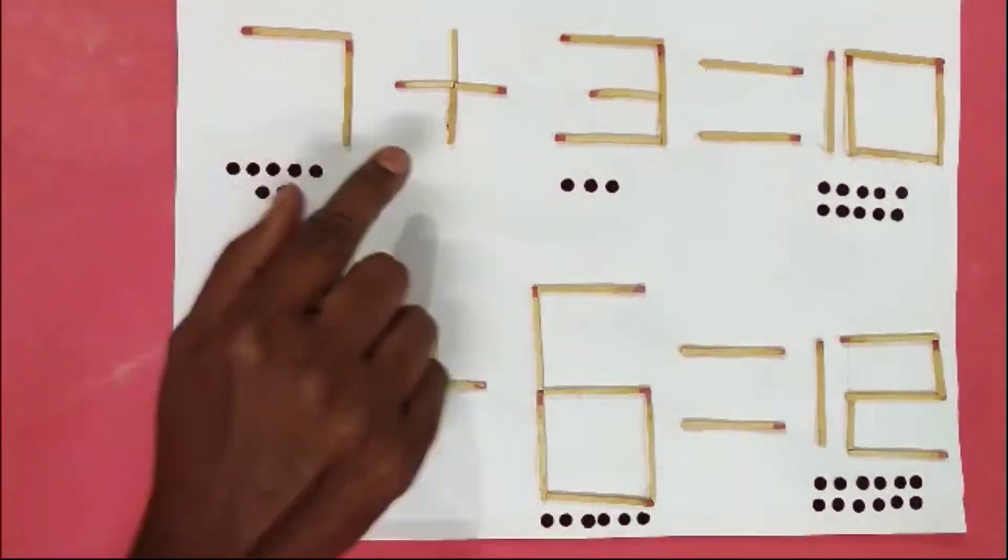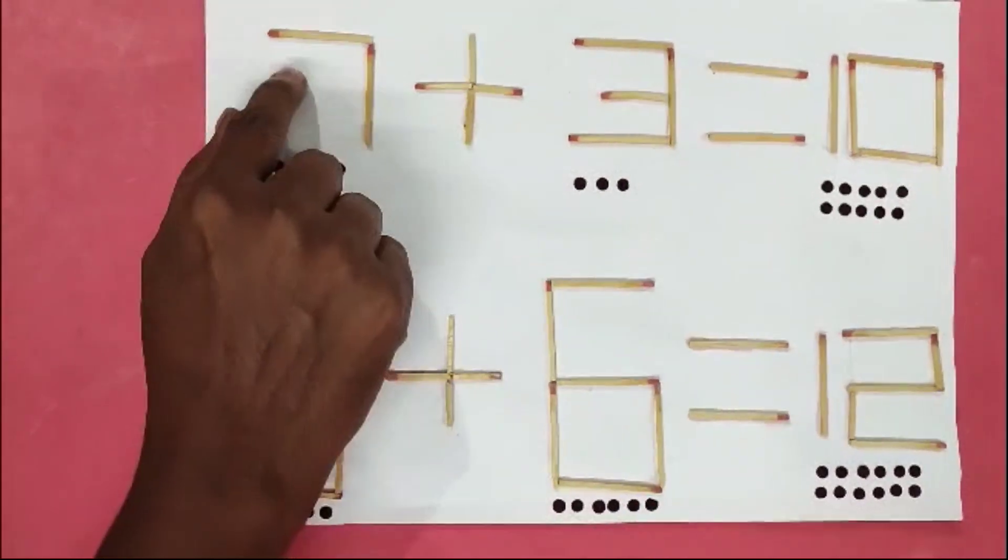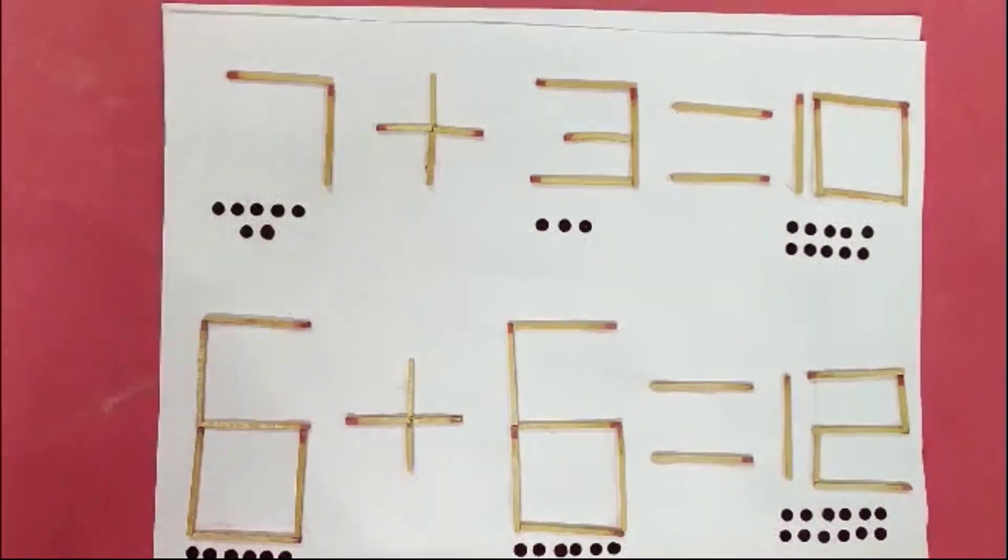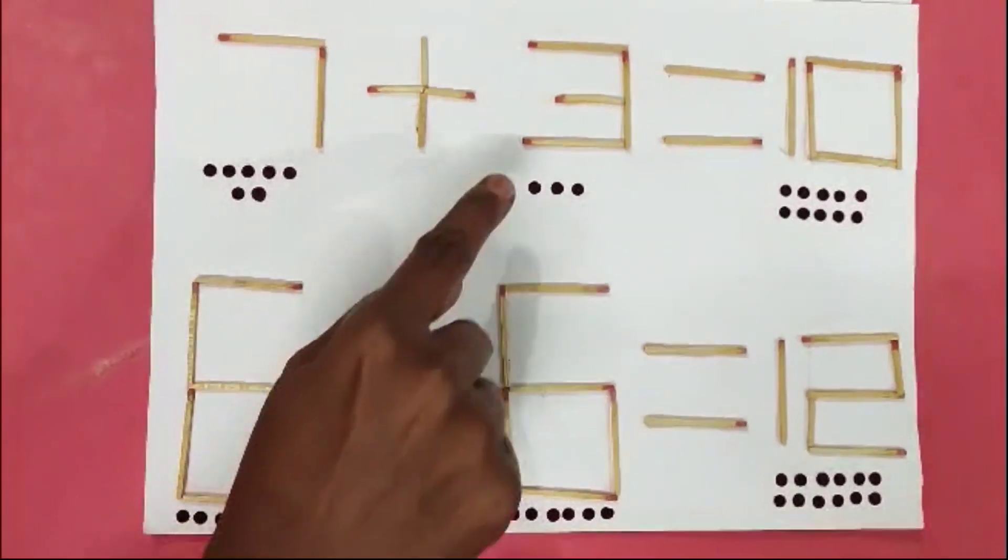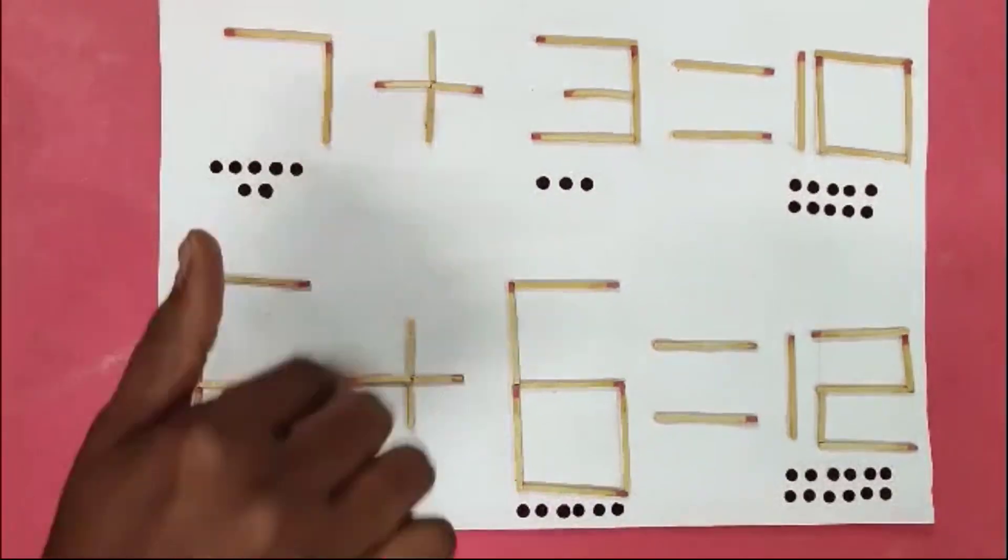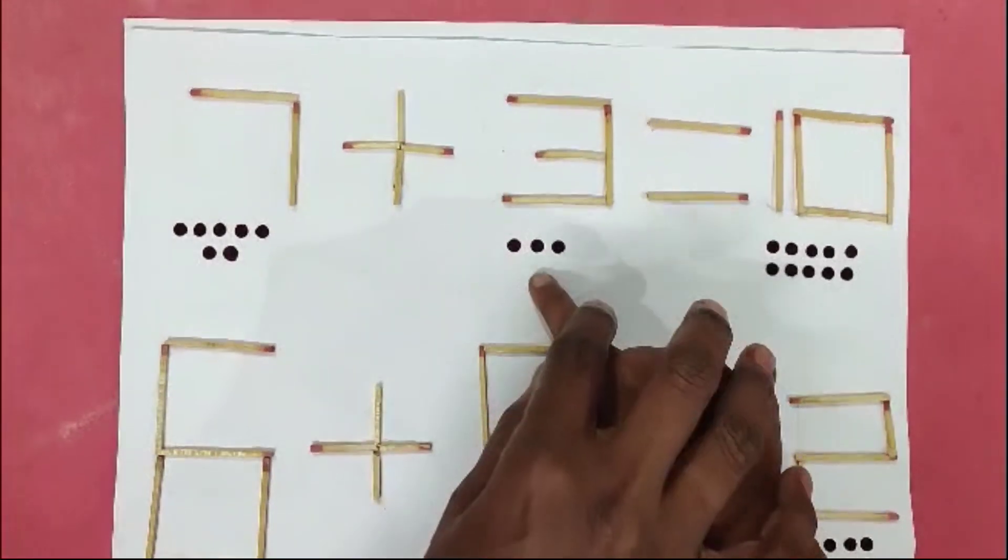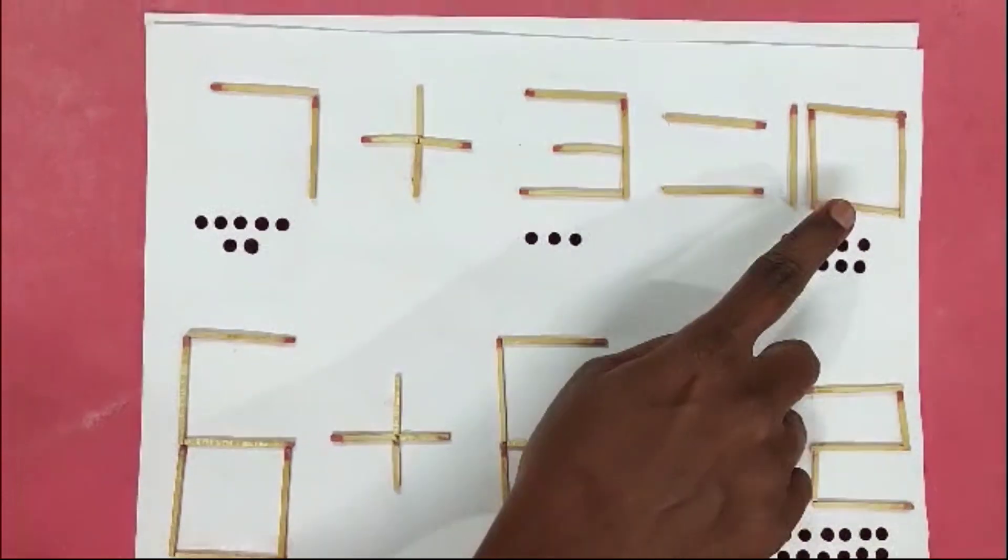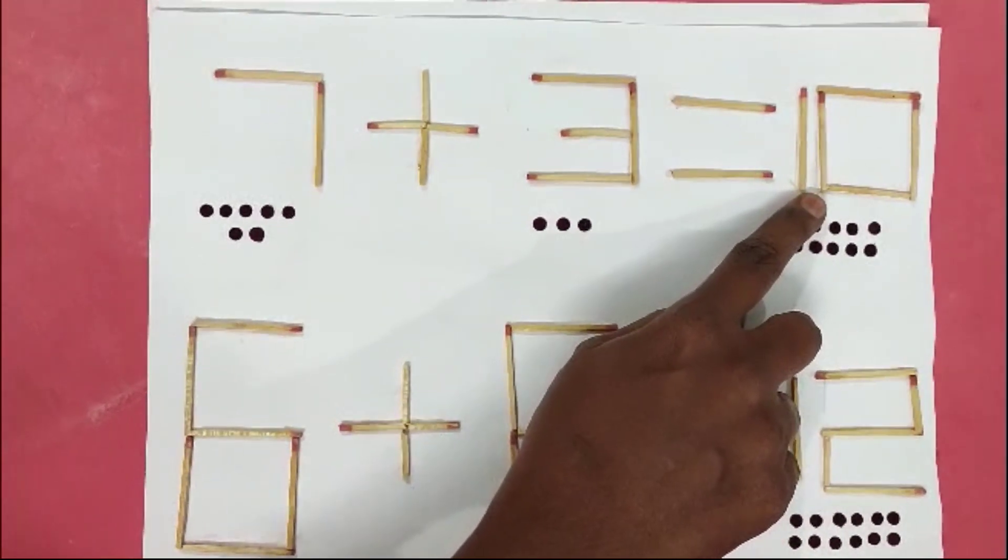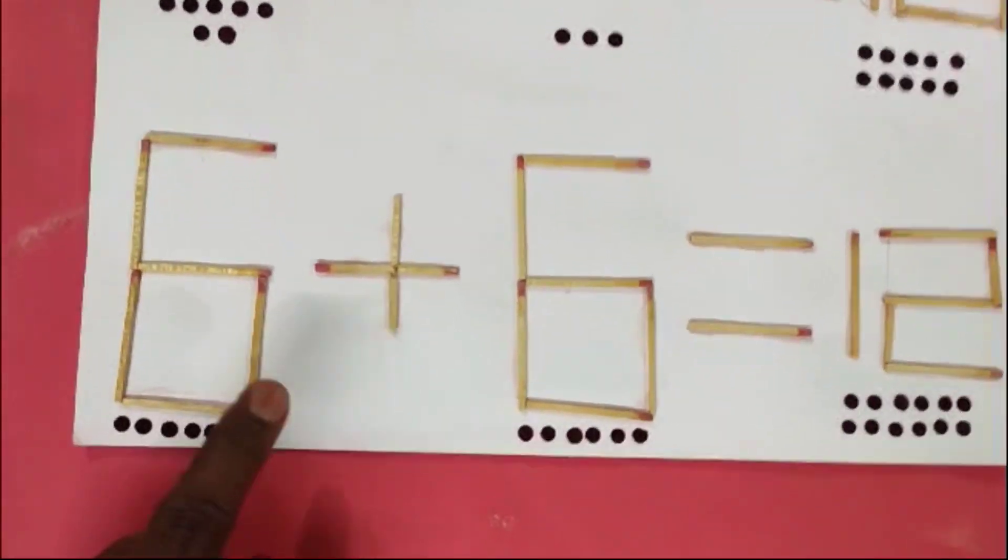7 plus 3. 7 in mind, 3 in fingers. After 7: 8, 9, 10. Answer? 10. Very good.